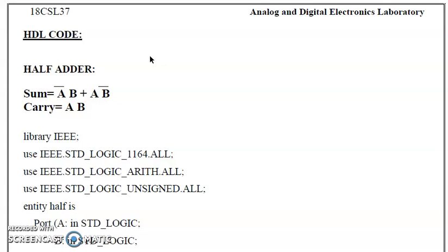Suppose if my output is Y, then Y <= A and B — because that is the assignment operator in VHDL. Just put a semicolon at the end. That is a single statement to realize an AND gate. Now, there are two types of HDL: one is Verilog HDL and another one is VHDL. In this video we are going to learn what is VHDL and how to realize basic gates.